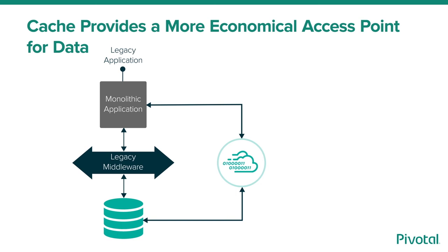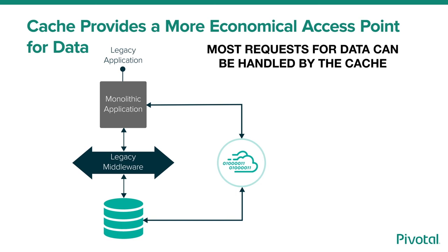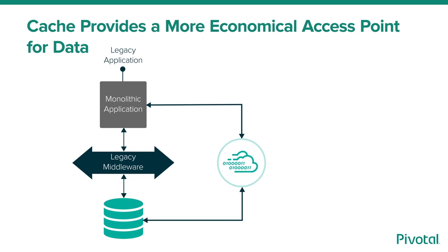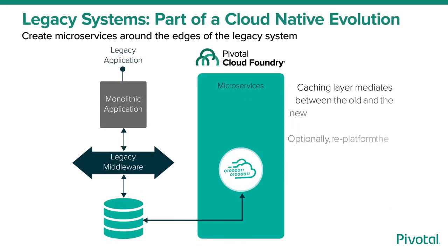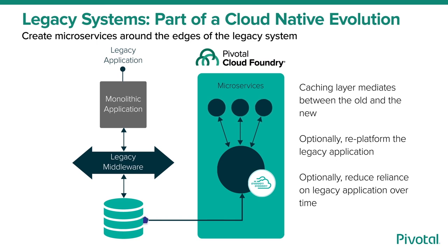Both the cost and scalability limitations of legacy databases can be reduced by adding a caching layer. Most of the application's requests for data can be handled by the cache, reducing the frequency of access to the legacy database to a mere fraction of what it was. Pivotal Cloud Cache's high-performance, scalable, and highly available cache can replace the more expensive, less available, and slower form of accessing data via the legacy database. Fortunately, there is a way to extend legacy systems despite the fact that they are brittle and expensive — new microservices-based applications can be created around the edges of the legacy system without impacting existing workloads.